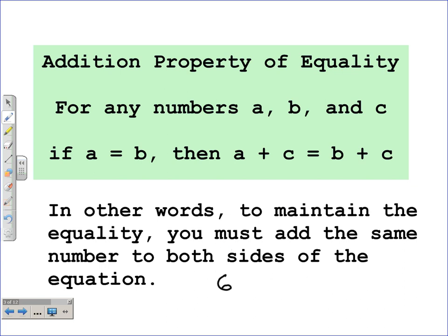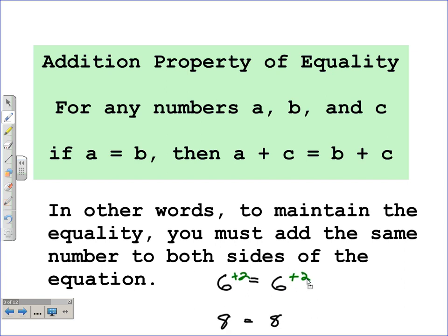For example, if I start with 6 is equal to 6, which we all know is true, and we add 2 to both sides, 6 plus 2 is 8 and 6 plus 2 is 8, and we see that equation is true — so we have to add to both sides. We could also move it down and put a line under it; it would be the same thing, adding 2 to both sides using the addition property of equality.